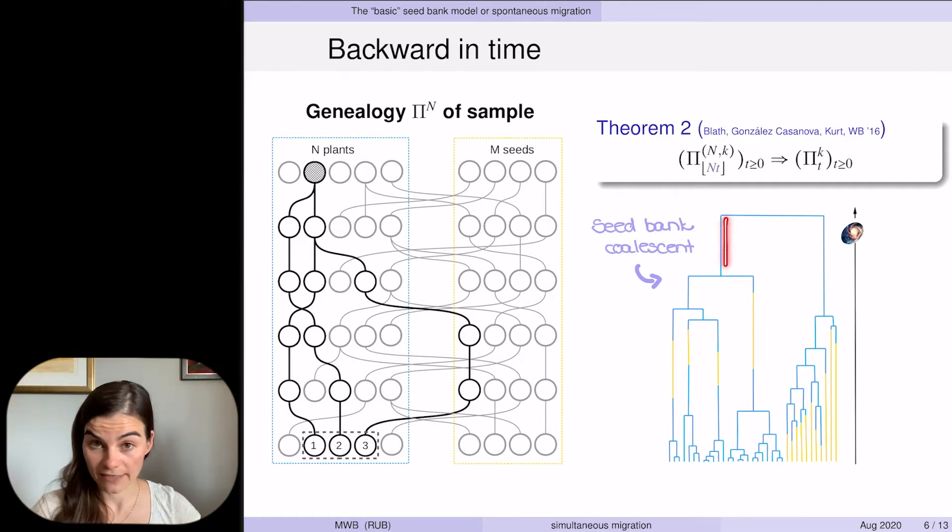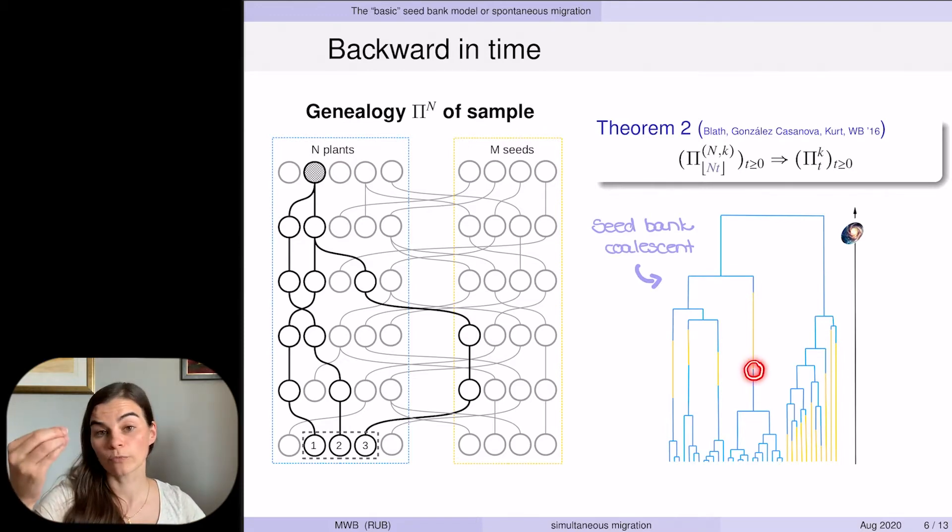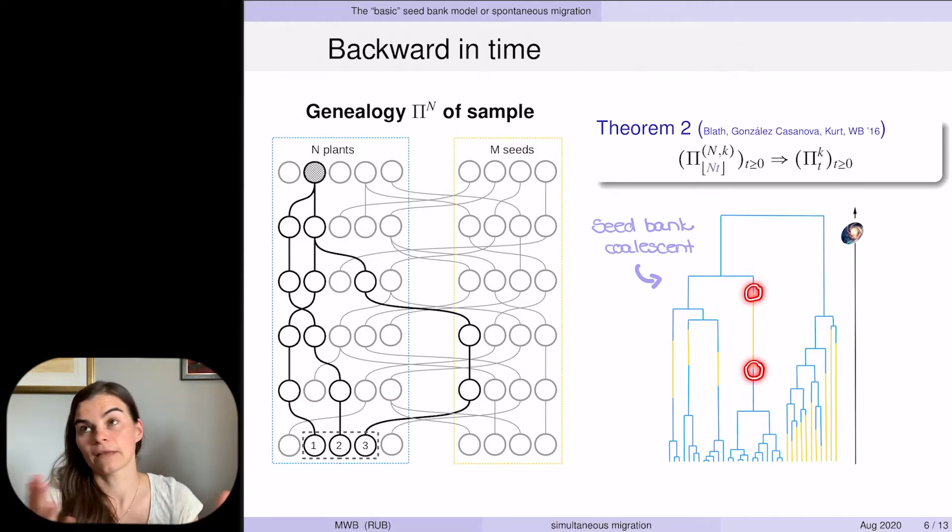Blue lineages are active lineages and yellow ones are dormant. You see there is a Kingman part, which is the pairwise merger at rate one per active pair among the active lineages. There is also the transition from active to dormant or from dormant to active, which happens at rate c per number of active or dormant individuals.